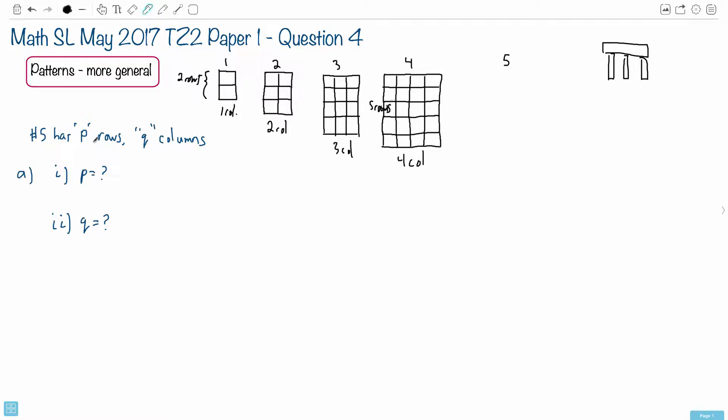So let's look at this then. They tell us drawing number five. What does it have? They say has P rows, that's the number of rows, and Q columns.